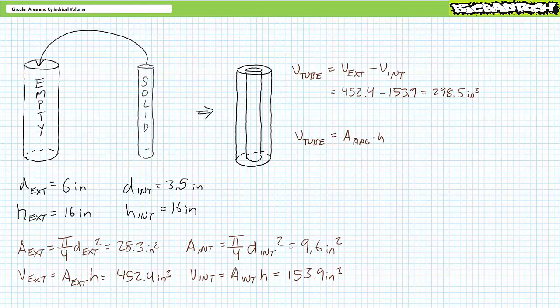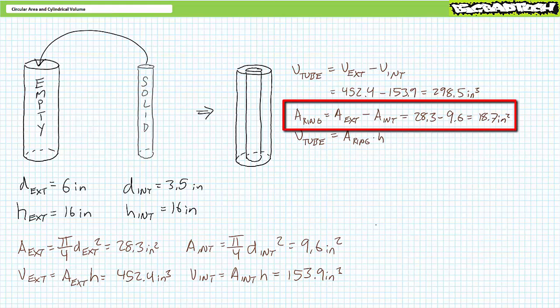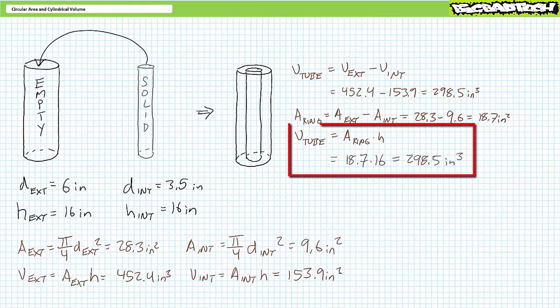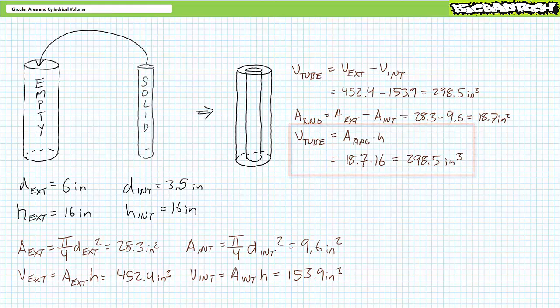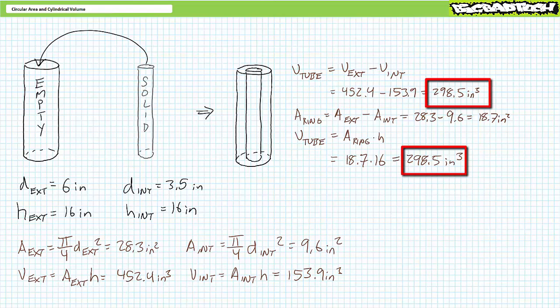Let's check our work using this second formula, where the volume of the tube-like space is the area of the ring times the height. Substituting the previously calculated area values into the ring area formula — outer minus inner — suggests the ring-like area has a surface area of roughly 18.7 square inches. The volume of the tube is the area of the ring times height. Substituting the calculated values demonstrates the volume of the remaining tube-like space is 298.5 cubic inches — exactly the same value calculated earlier using a different method.